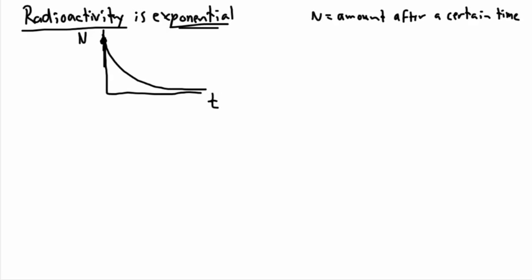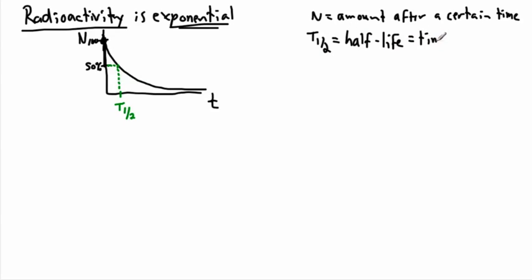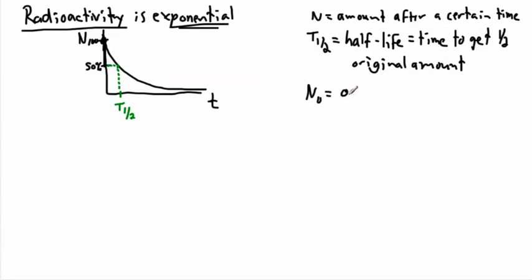At some certain time, you have 100% of whatever you started with. There exists a time when you have 50% of what you started with, and that time is called t one-half — the half-life. The half-life equals the time to get to one half the original amount. n₀ is the original amount — that's what you have at t equals zero.